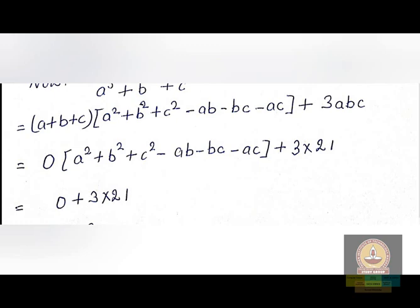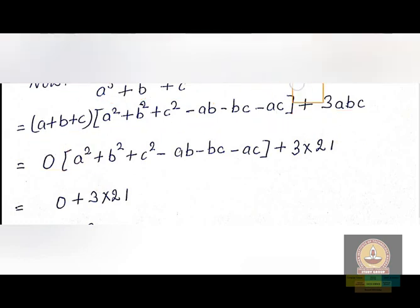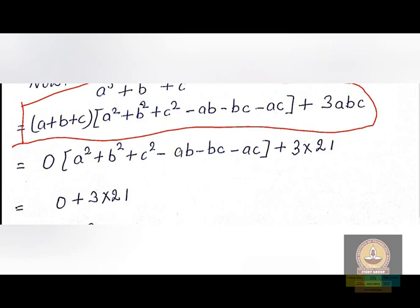Now we need to find a³ + b³ + c³. The formula is: a³ + b³ + c³ = (a + b + c)(a² + b² + c² − ab − bc − ac) + 3abc. I'm using this form because it is easier to solve and better for understanding.